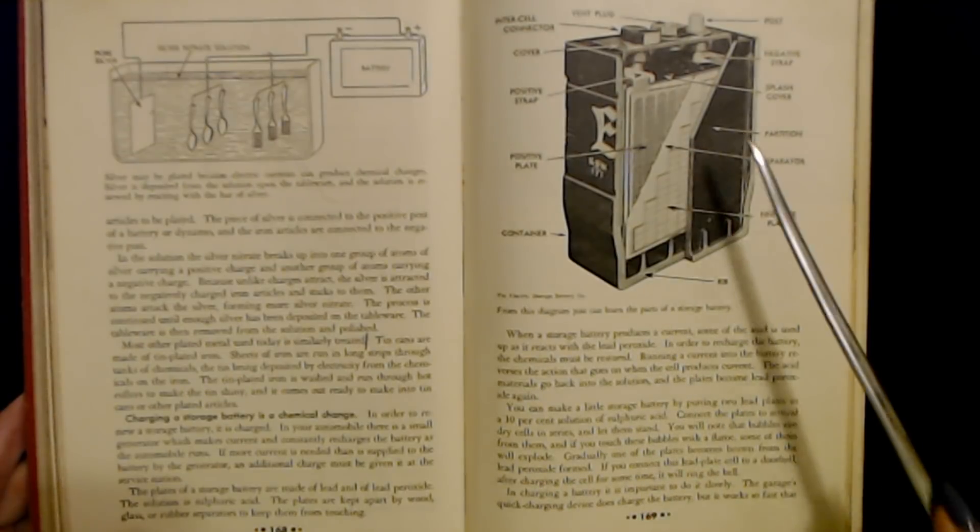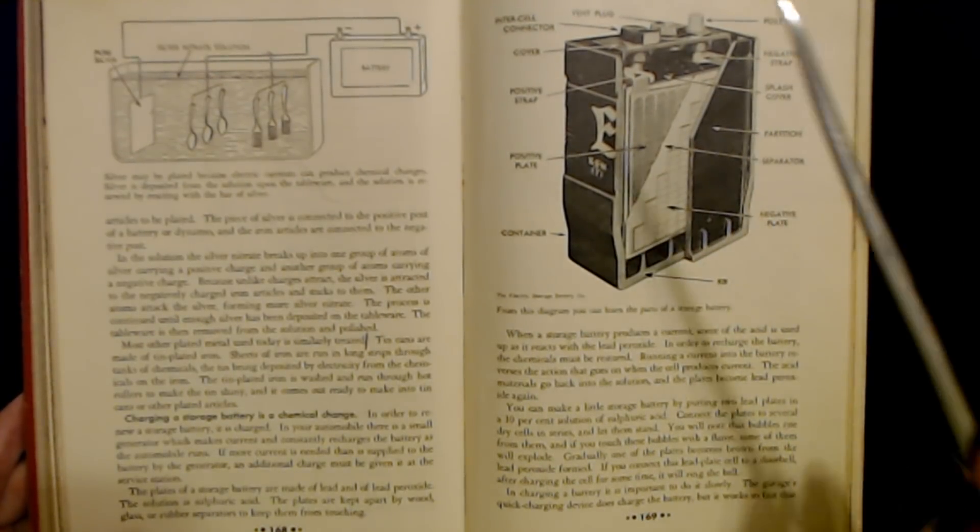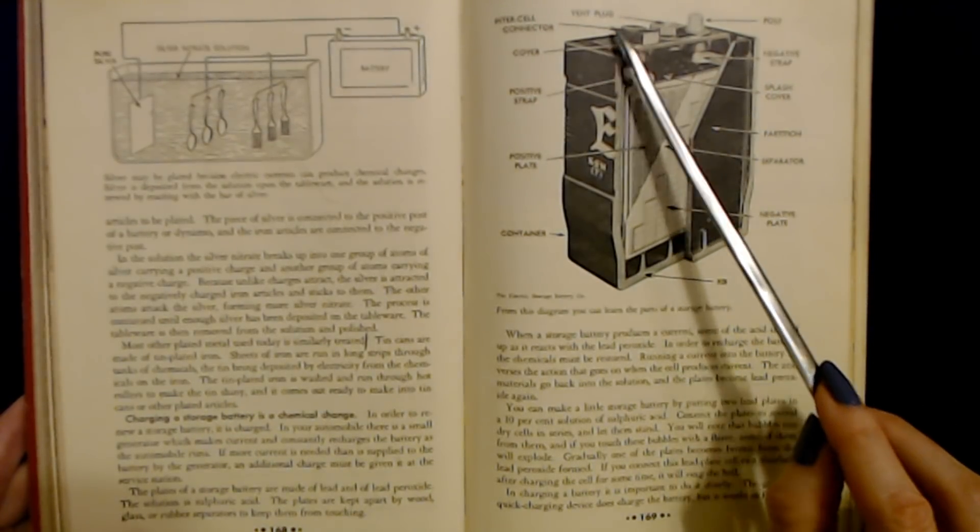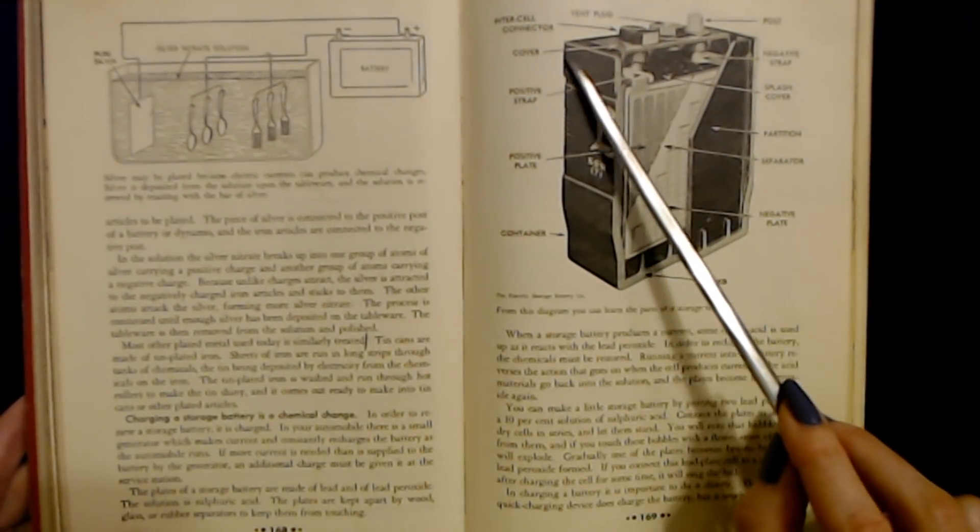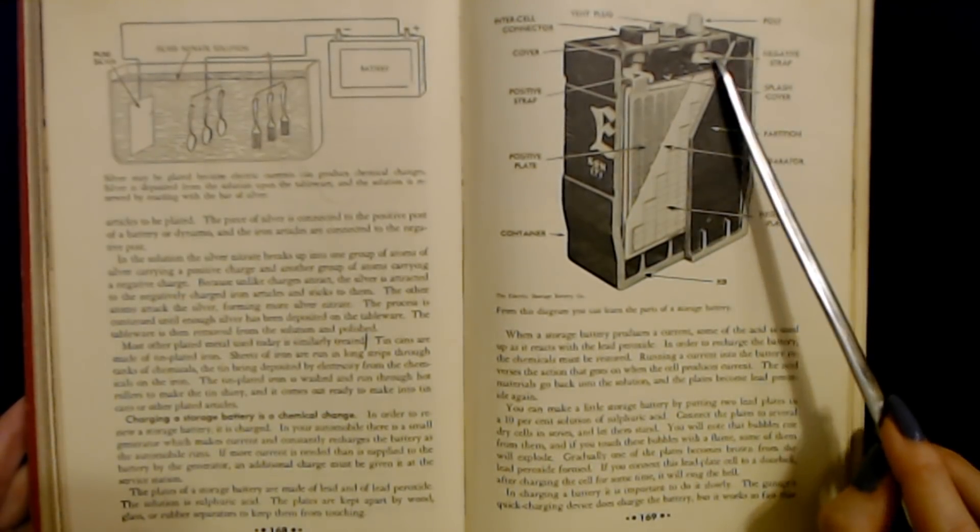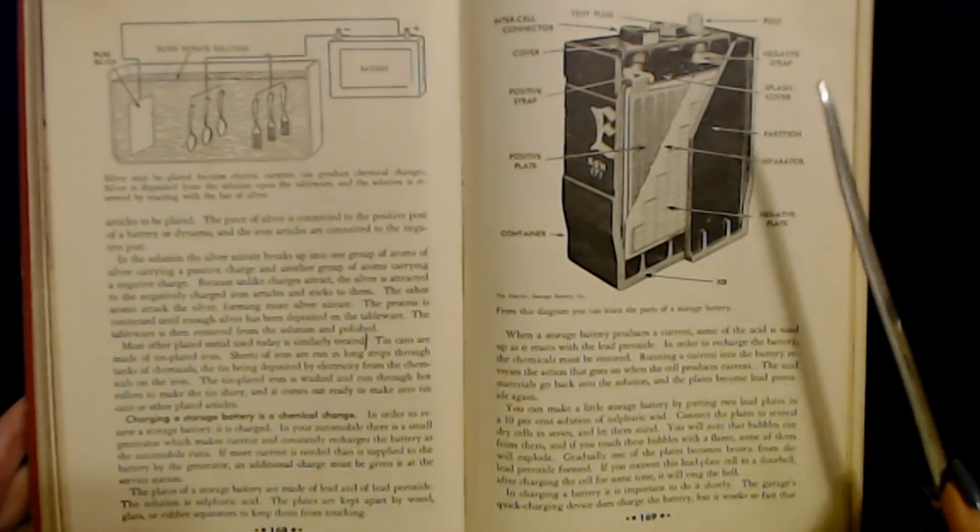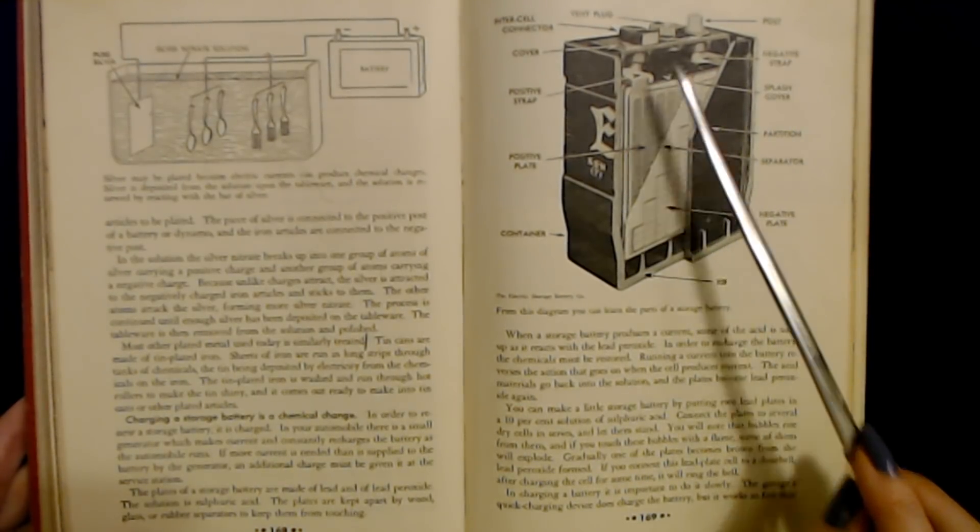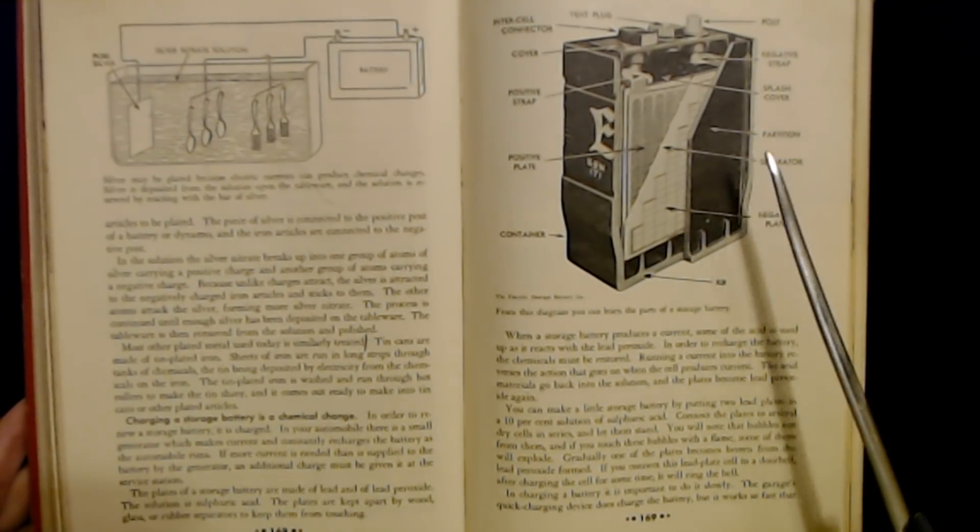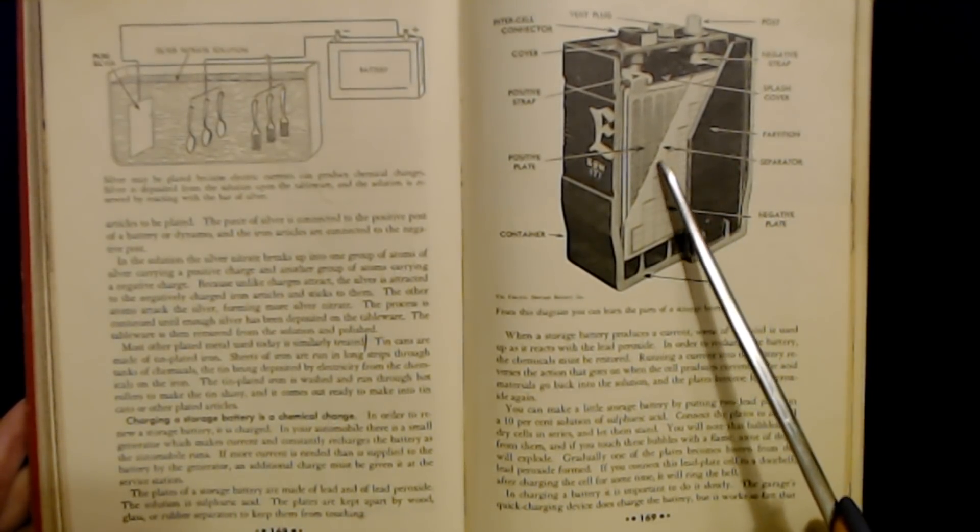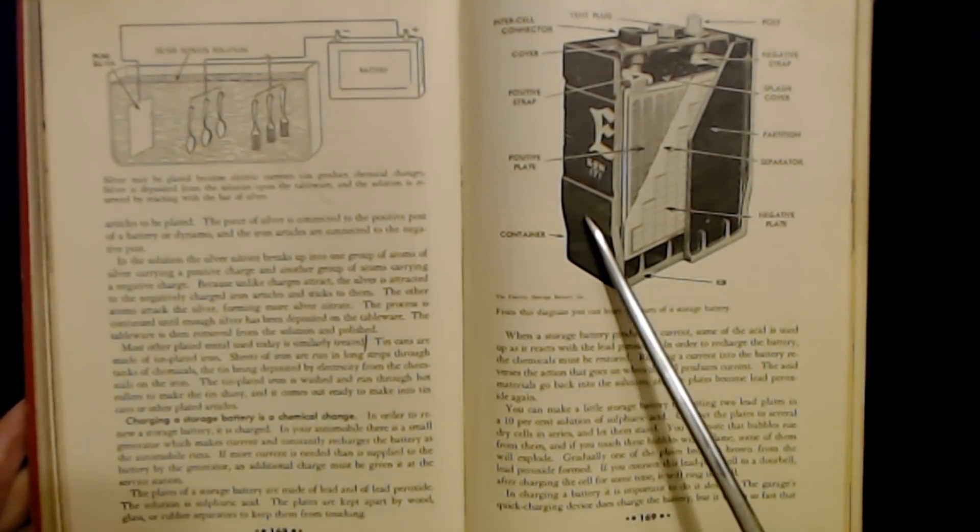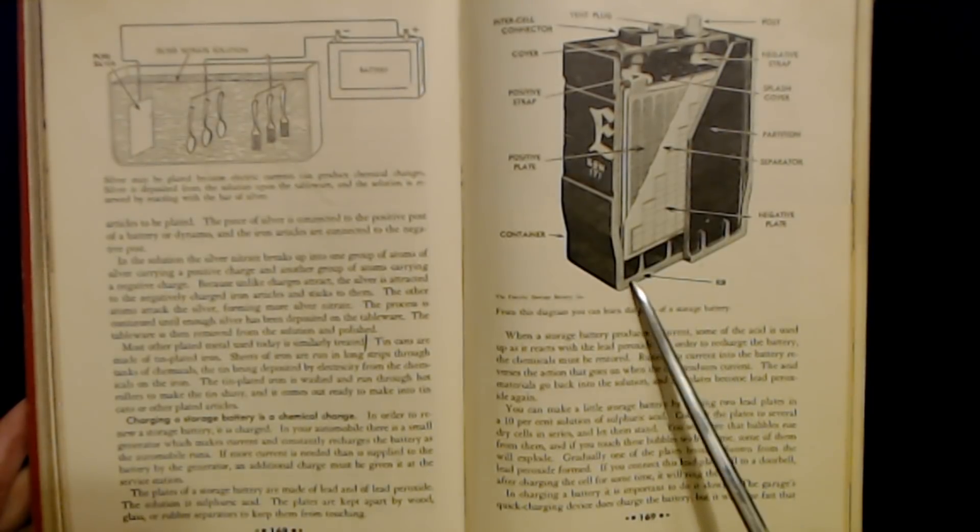From this diagram, you can learn the parts of a storage battery. Up here at the very top, we have the vent plug and the post. This is the intercell connector and the cover. This is a positive strap and over here on this side is the negative strap. This is the splash cover. Down here is the positive plate. This is the partition. This is the separator. This is the negative plate. This is the container. And this at the bottom is the rib.